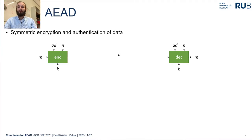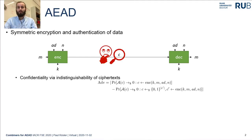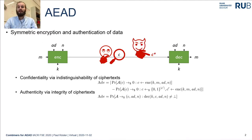For security, we require confidentiality, meaning that the ciphertext output by the encryption is indistinguishable from a random bit string of the same length as a valid ciphertext. We also require authenticity, meaning that ciphertexts output by the encryption cannot be manipulated such that they are still accepted by the decryption algorithm — any manipulation or crafting of ciphertexts by an adversary results in a rejection by the decryption algorithm.